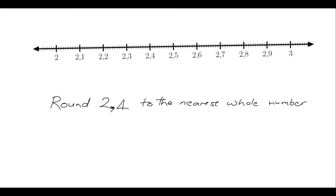Imagine you were asked to round 2.4 to the nearest whole number. The first thing you need to be sure of is what are whole numbers. Whole numbers are 0, 1, 2, 3, 4, 5, 6, etc.